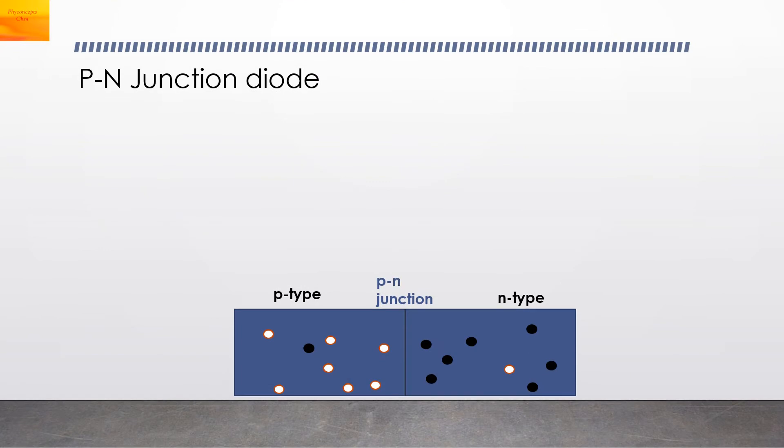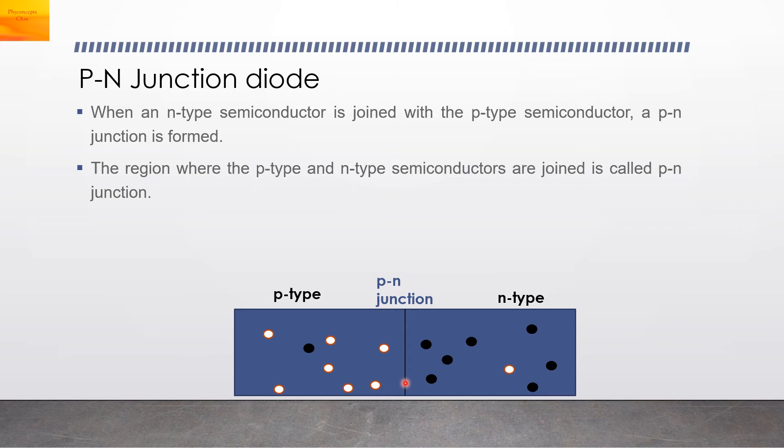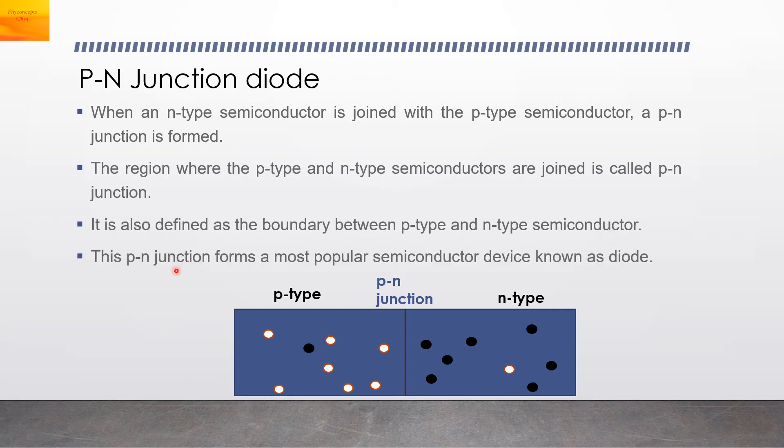When we speak of semiconductors, they are of two types: intrinsic and extrinsic semiconductors. Extrinsic semiconductors are classified into N-type semiconductor and P-type semiconductor. When you join the P-type semiconductor and the N-type semiconductor, we get the P-N junction diode. Here the P-type region is joined with the N-type region. The region where the P-type and N-type semiconductors are joined is called P-N junction. It is a kind of boundary between the P-type and the N-type semiconductor. This P-N junction forms a most popular semiconductor device known as diode.